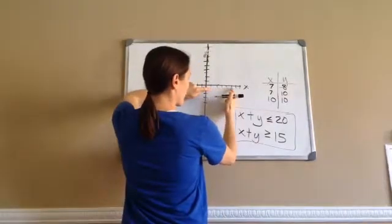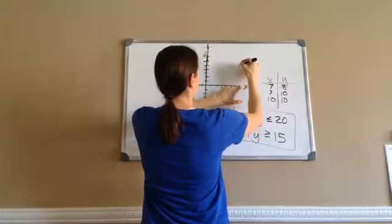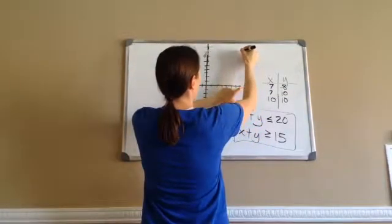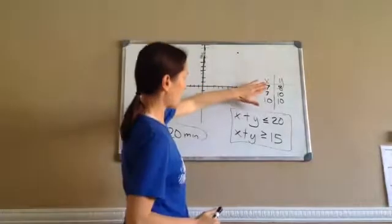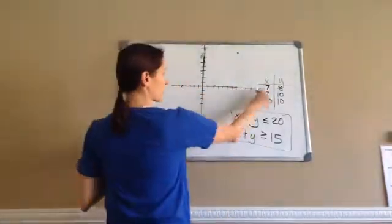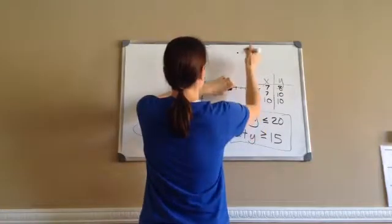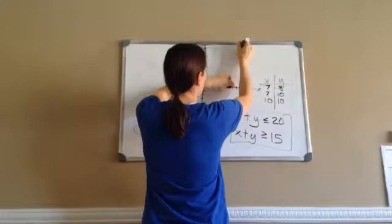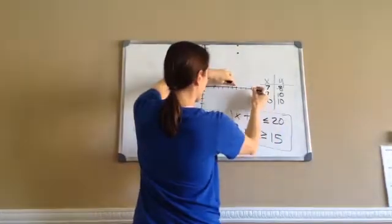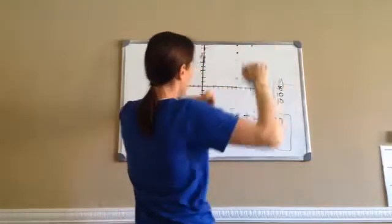So here we go. 1, 2, 3, 4, 5, 6, 7. And then 1, 2, 3, 4, 5, 6, 7, 8. As I said, I'm going to go and graph these. So 7, 8 is 1, 2, 3, 4, 5, 6, 7. And then 8 is right here. 7, 10 is right here. And 10, 10 is right here. I think I did that right.